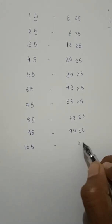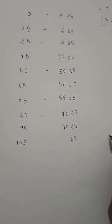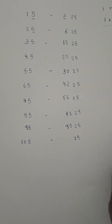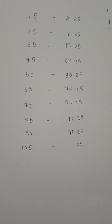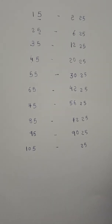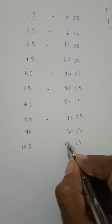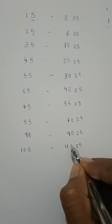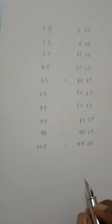Last figure is 25. Here the number is 9. Add 1: 10. Then 10 plus 1 is 11. So 11 into 10 is 110. Answer is 11025.